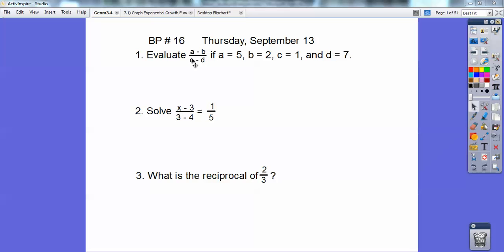This one says evaluate the fraction (A - B) / (C - D) if A equals 5, B equals 2, C equals 1, and D equals 7. Let's just plug them in. So A is 5, B is 2, C is 1, D is 7. 5 minus 2 is 3, 1 minus 7 is negative 6, 3 over negative 6 equals negative 1 half.